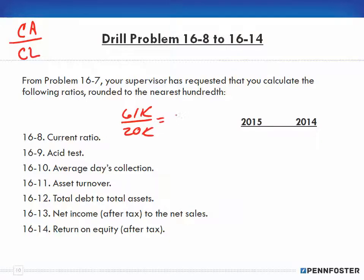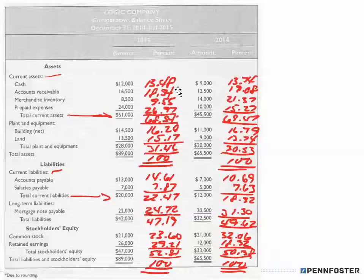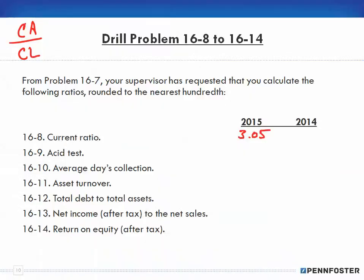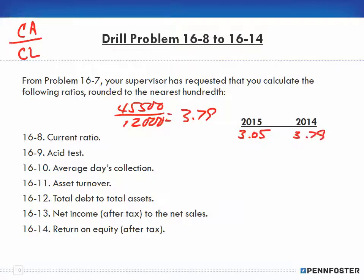So I have 61,000 divided by 20,000 for the liabilities, and that gives me a ratio of 3.05 for 2015. For 2014 I have 45,500 and I have 12,000, so 45,500 over 12,000, and that gives me 3.79.